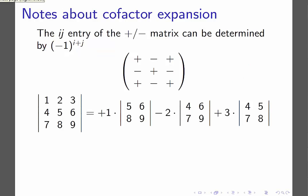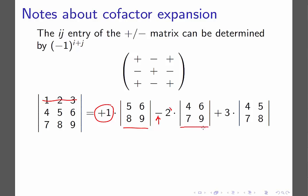That also means that if I wanted to find the determinant of the matrix with entries 1 through 9 and do cofactor expansion along the first row, I would take the first entry — the 1 — and multiply it by the cofactor from crossing out the first row and first column, then minus the 2 multiplied by the cofactor from crossing out the first row and second column, then plus 3 multiplied by the cofactor from crossing out the first row and third column.